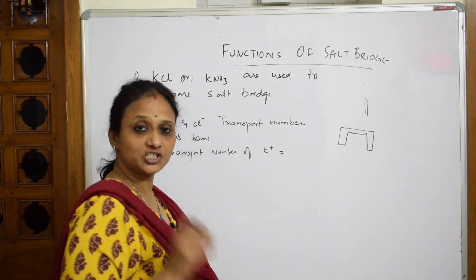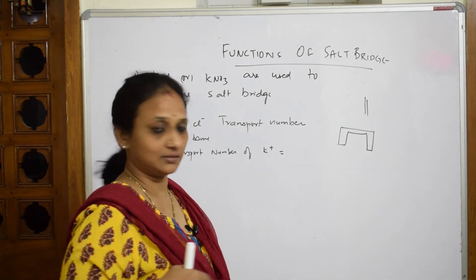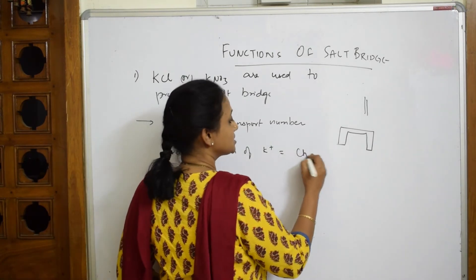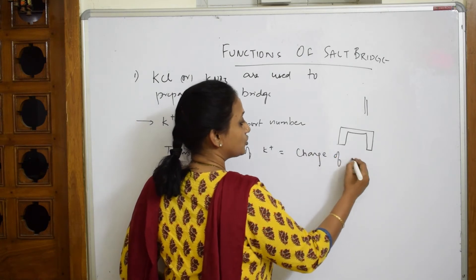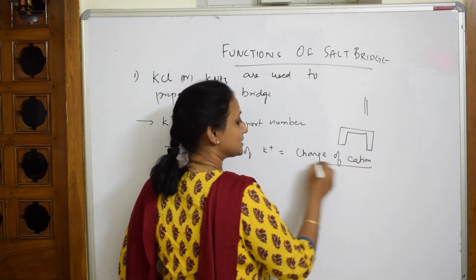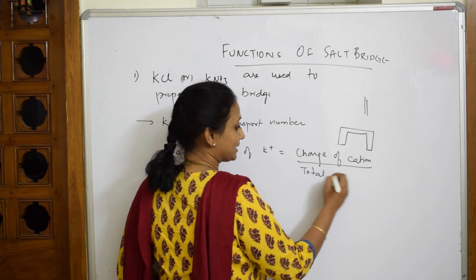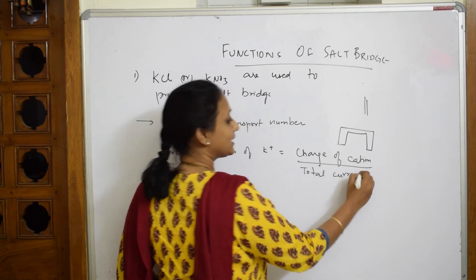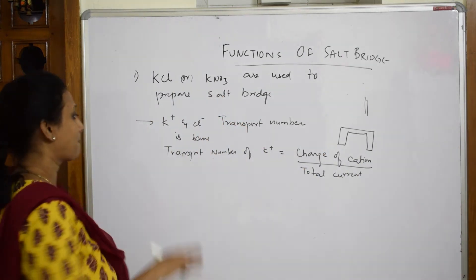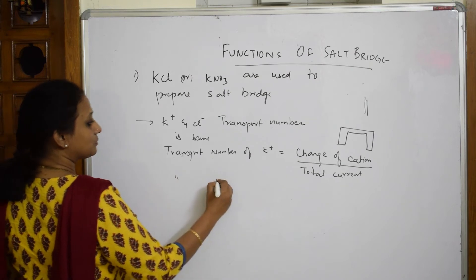The charge of the cation by the total current. So this is charge of cation. When I calculate this divided by the total current present in the half cell, I get cation transport number. Now transport number of chloride ion - the same thing: charge of anion divided by total current.